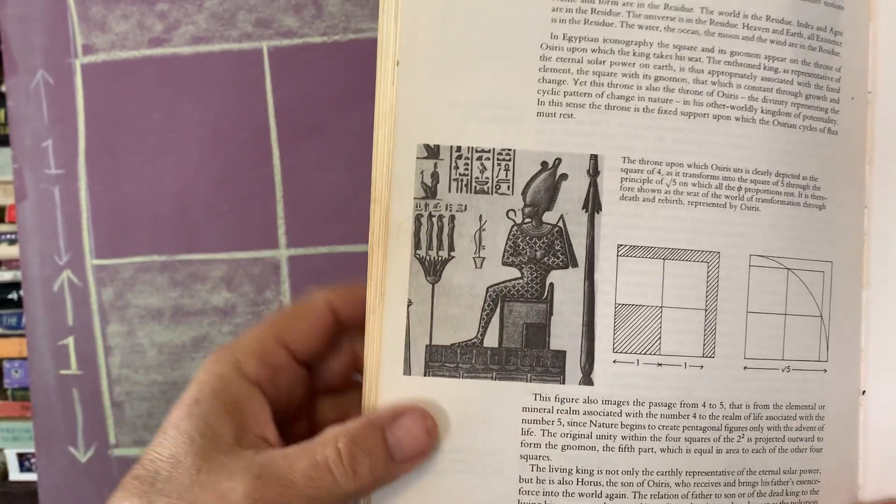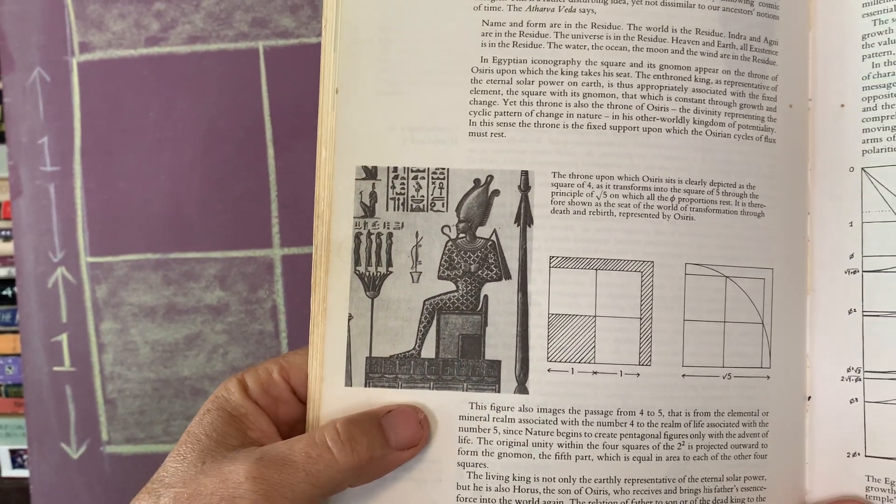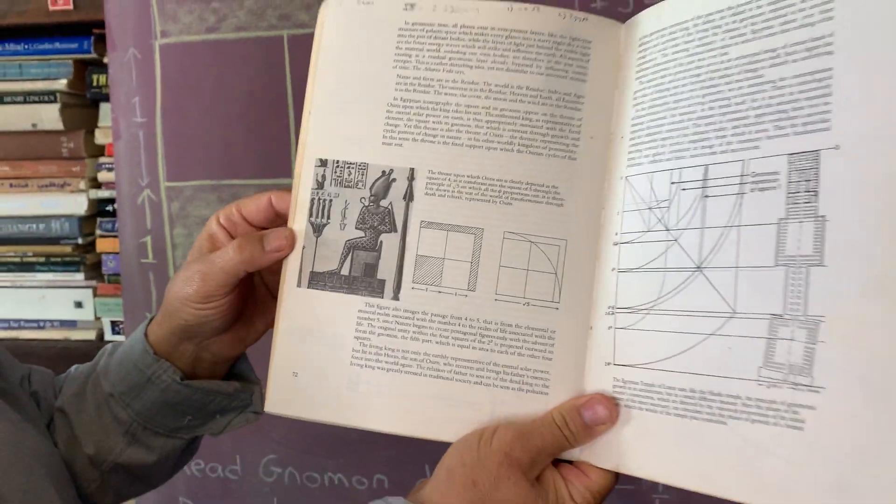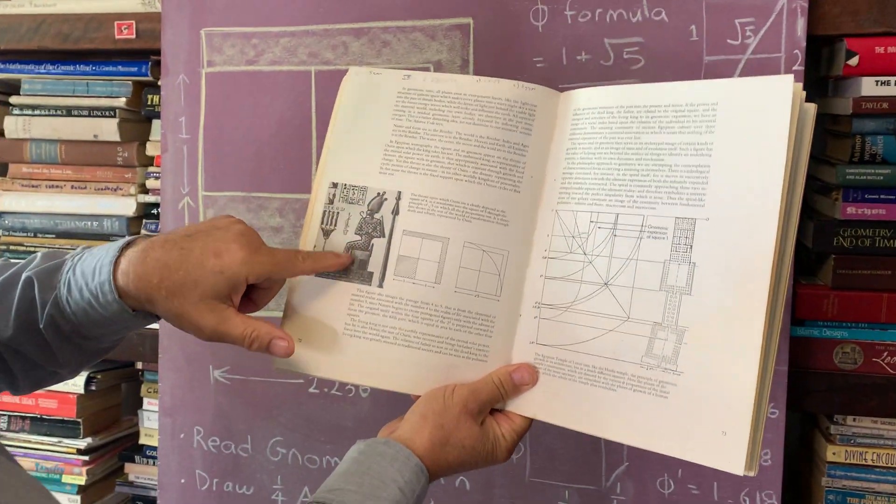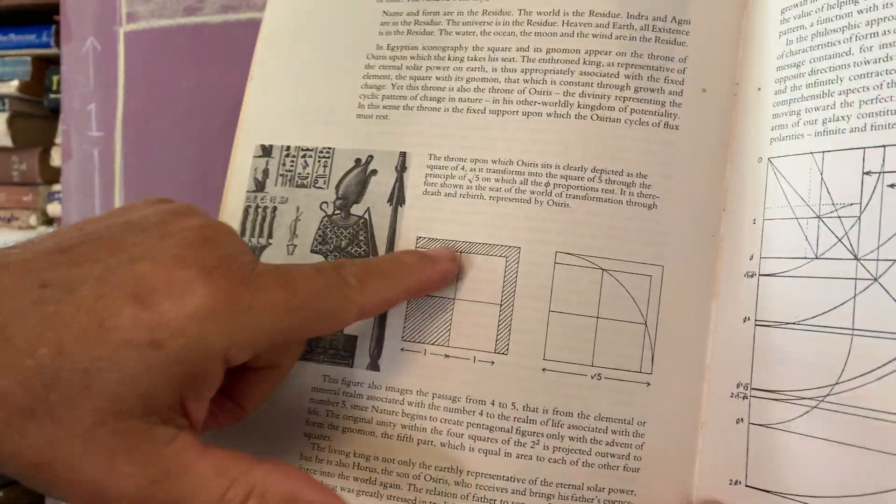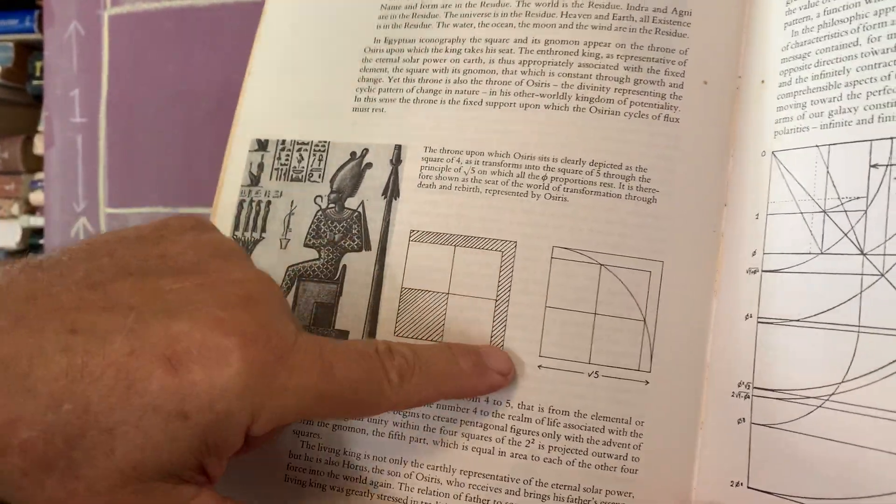See that L shape in there? He's saying that the 4 has become the 5 and that this is the throne for deity, for royalty. From here, we take that throne that he's drawn, which I've just drawn, and we've just created the gnomon and the L-shaped.